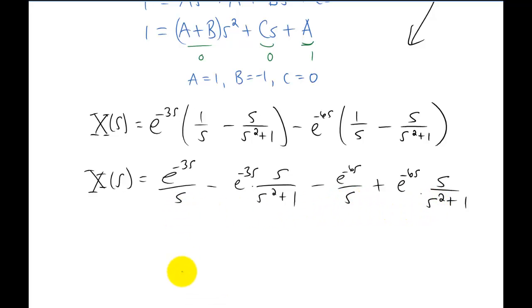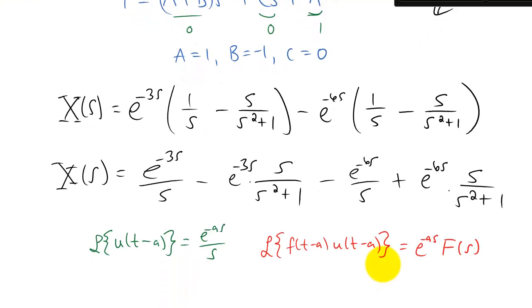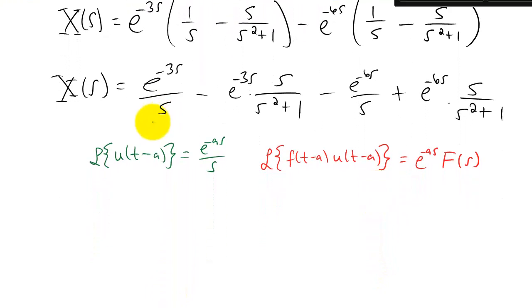Don't forget the Laplace transform properties that we're going to be using to do this. For the first term and the third term we're actually going to be using the very simple property directly from the Laplace transform table. And for the second term and the fourth term we're going to be using the red property here from this table. Now for both the second and the fourth term the capital F of S from this formula here is just going to be S over S squared plus one. Do an inverse transform on that to get little f of T and you get cosine of T.